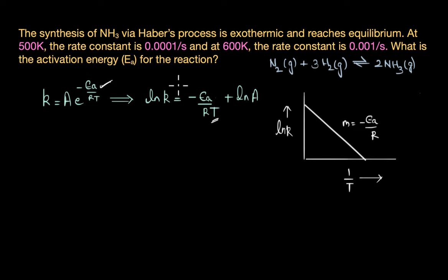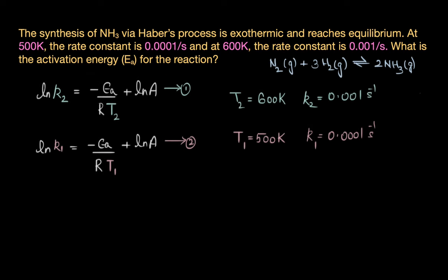Let us now use this equation along with the information given to figure out the activation energy. We get two different equations: ln K2 equals minus Ea by RT2 plus ln A, and ln K1 equals minus Ea by RT1 plus ln A.